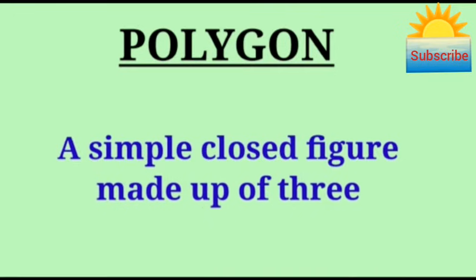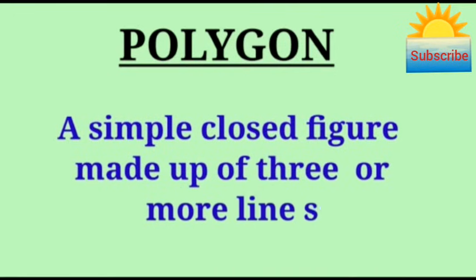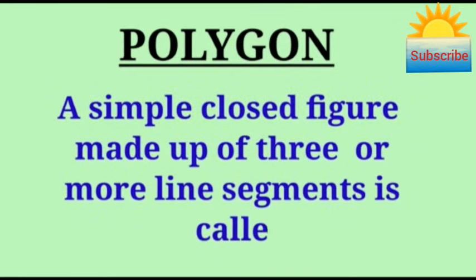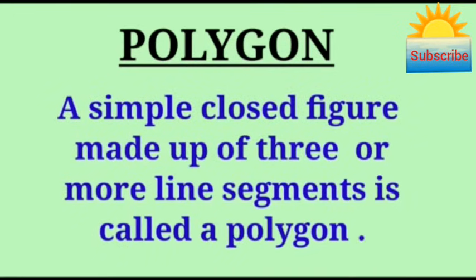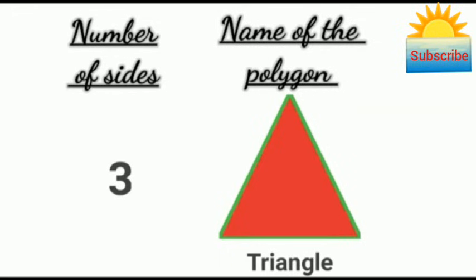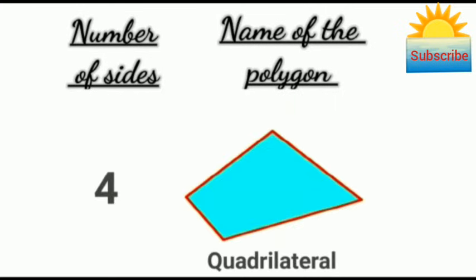A simple closed figure made up of three or more line segments is called a polygon. A polygon of three sides is called a triangle. A polygon of four sides is called a quadrilateral.